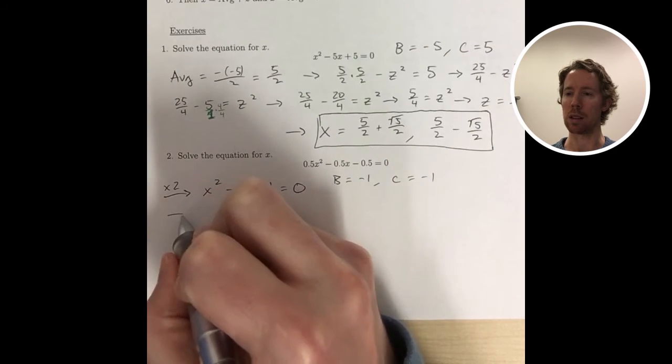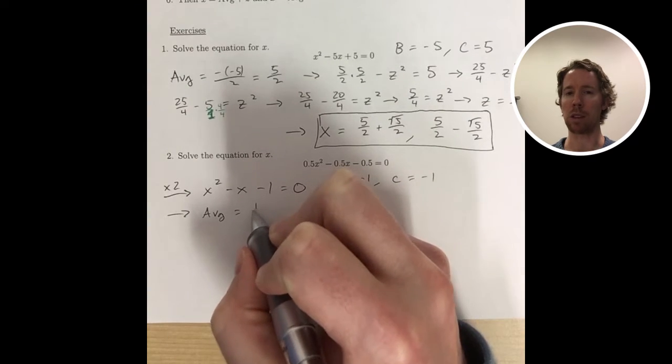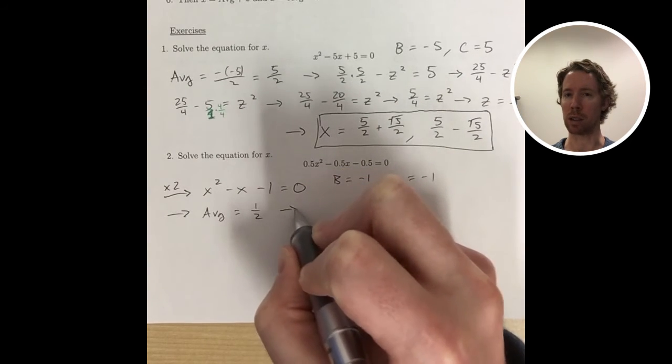So we see that b is negative 1 and c is negative 1. The average is negative b over 2, so that's positive 1 half.